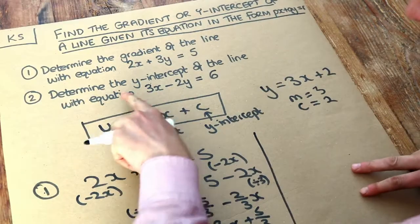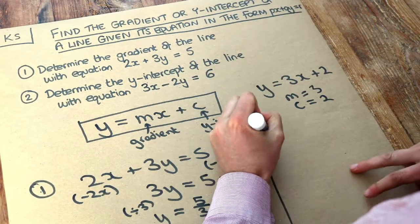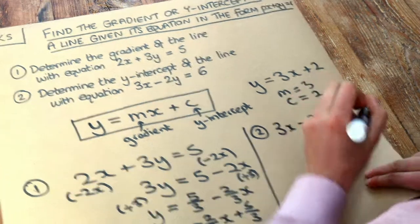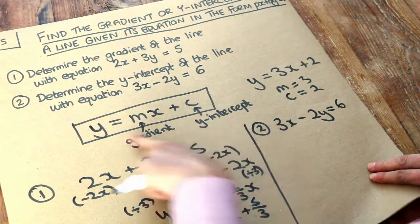Let's do the same with this second one. We've got 3x minus 2y equals 6. We want to get y on its own to make y the subject, so we have it in this form.